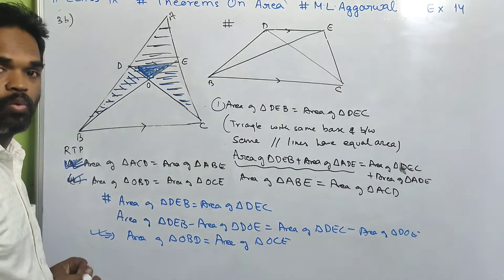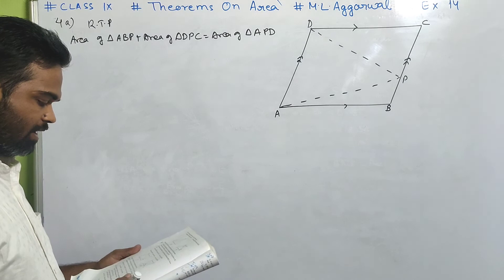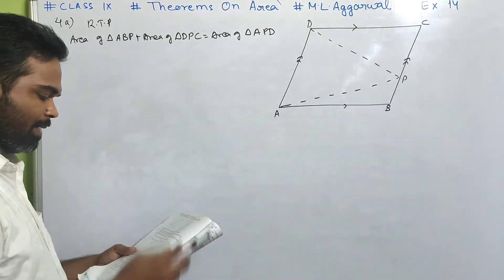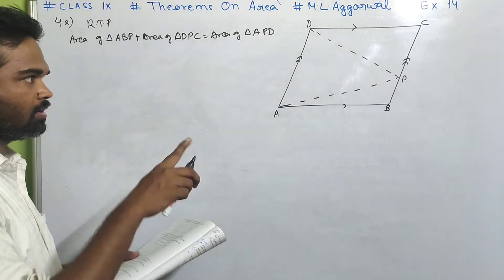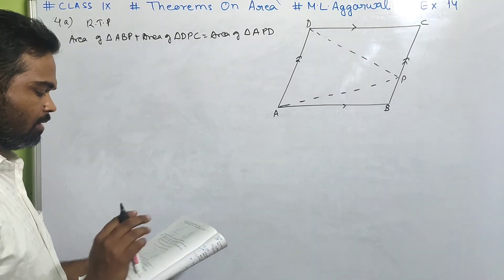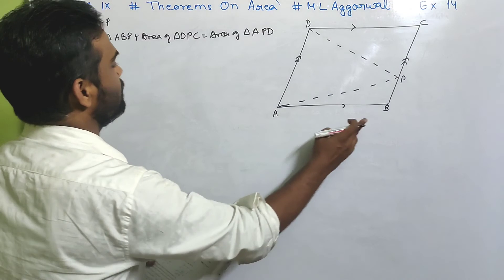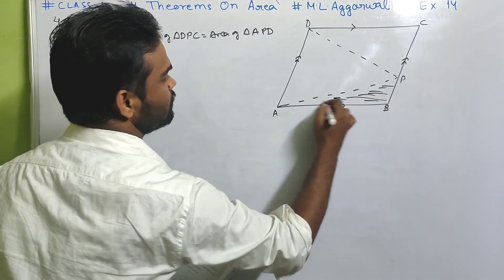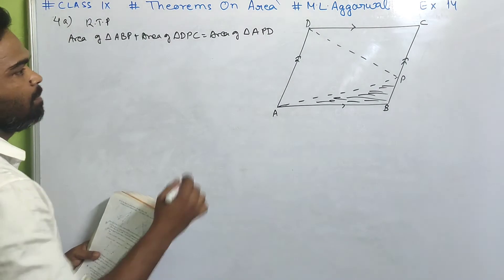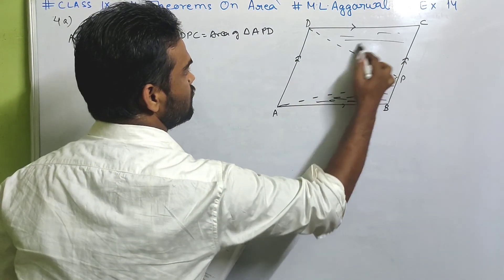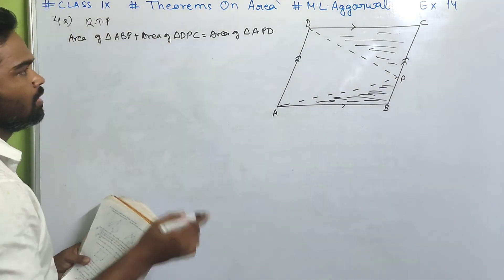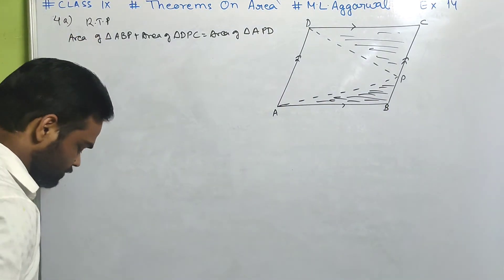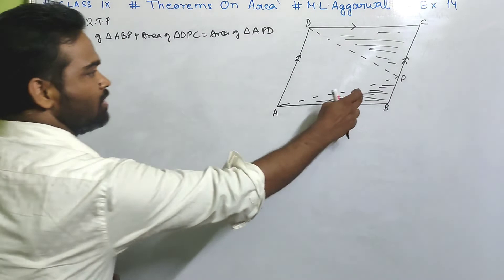Now let us do number 4. Look at 4A. In the figure given, ABCD is a parallelogram and P is any point on BC. Prove that area of triangle ABP plus area of triangle DPC equals area of triangle APD. When you add these two shaded regions you get area of triangle APD. Let us see how.